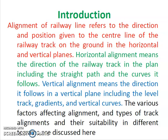The horizontal alignment means the straight path and curves. The vertical plane means the gradient and vertical curves. Gradient is the rise or fall with respect to the horizontal.